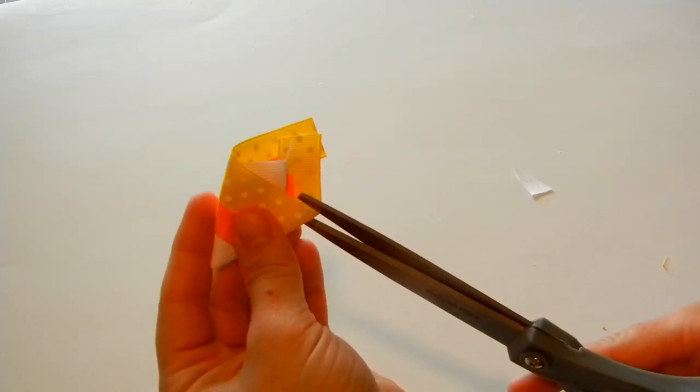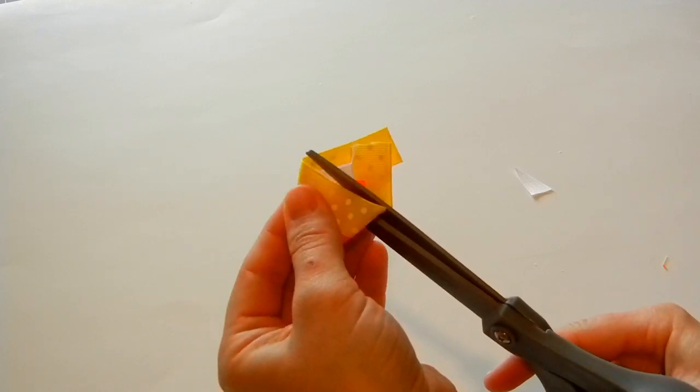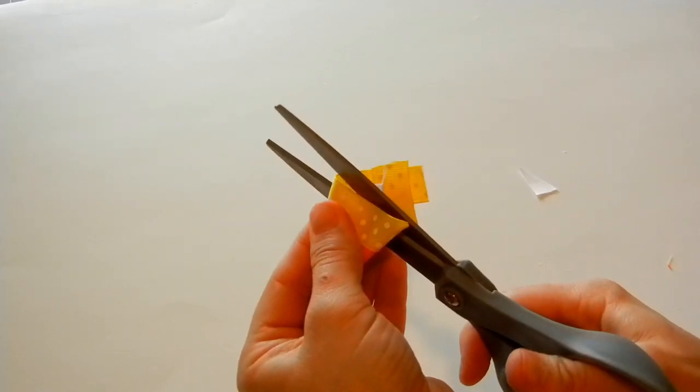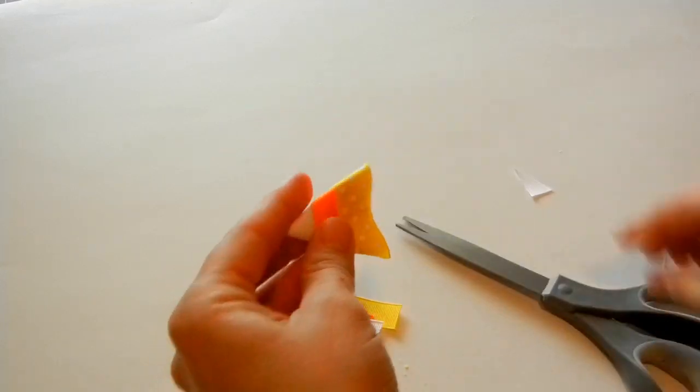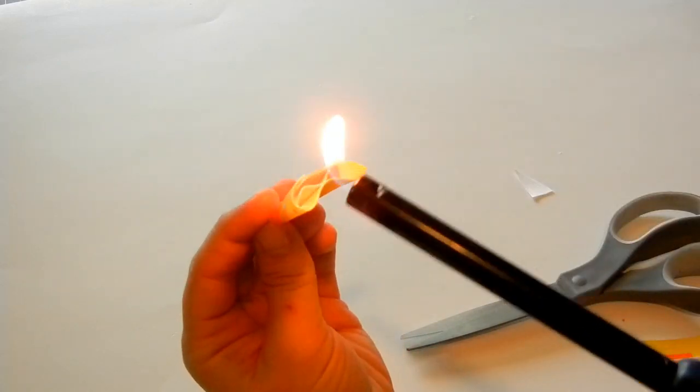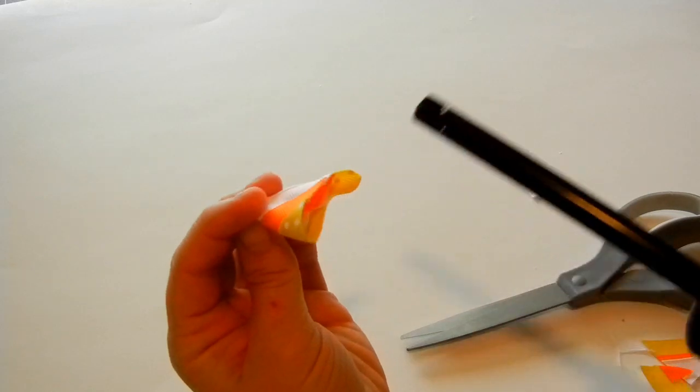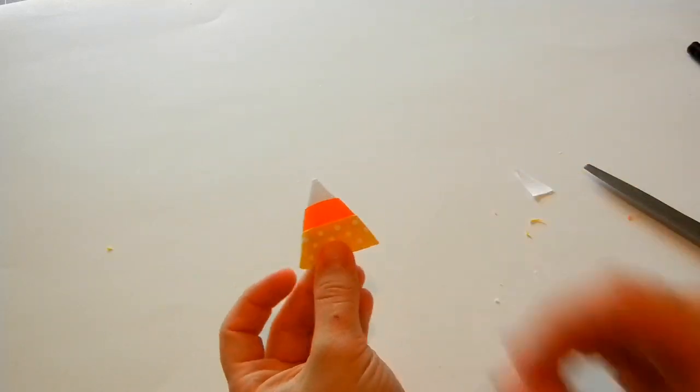And then we take our scissors and cut off the excess. And again, we'll go back and seal the ends. That finishes our candy corn.